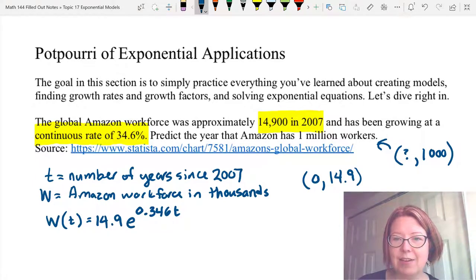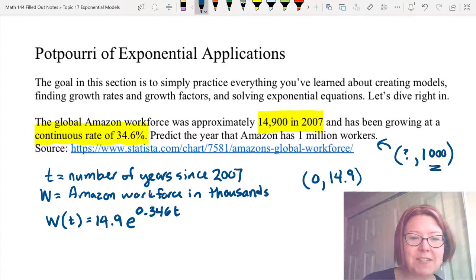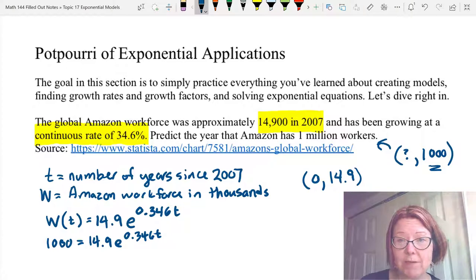Now we just need to predict the year that Amazon has 1 million workers. So that's the 1,000,000. So that's what we're going to put in for W. 1,000 equals 14.9e^(0.346t). We want to solve that for t.